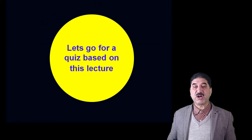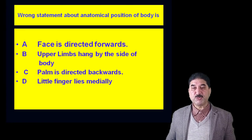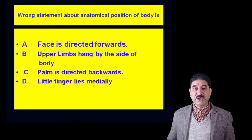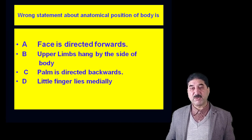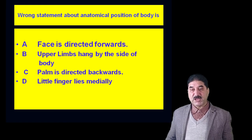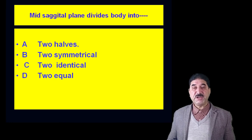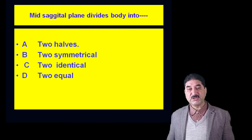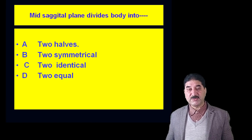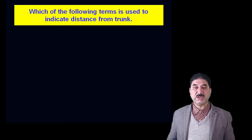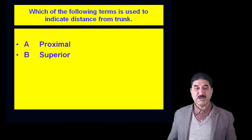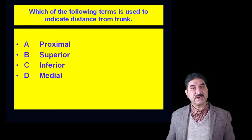Now let us go through a quiz based on this lecture. Question 1: Wrong statement about the anatomical position of the body is — A: Face is directed forwards. B: Upper limbs hang by the side of the body. C: Palm is directed backwards. D: Little finger lies medially. The correct answer is C — palm is directed backwards is the wrong statement. In anatomical position, the palms face anteriorly or forwards. Question 2: Mid-sagittal plane divides the body into — two symmetrical halves, two identical halves, or two equal halves. B — two symmetrical halves — is correct. Question 3: Which term indicates distance from the trunk? Proximal is the correct answer.